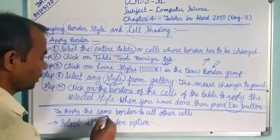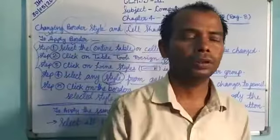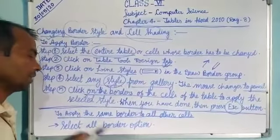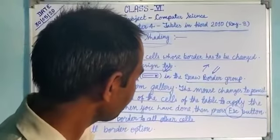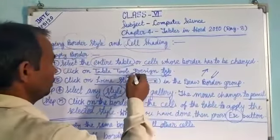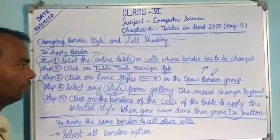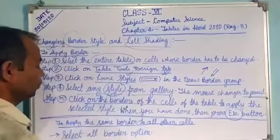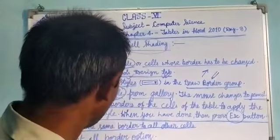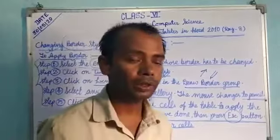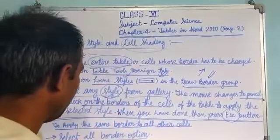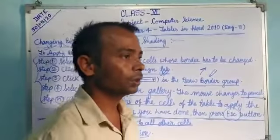To apply the same border style to all other cells, after setting the style for some cells, go again to the Table Tools Design tab. In the Draw Borders group, find the All Borders option and click it. That border style will then be applied to all selected cells.